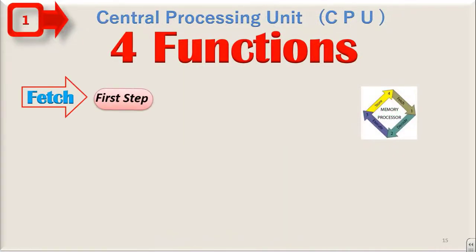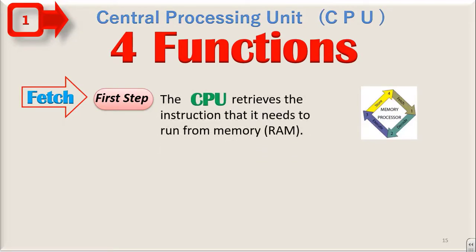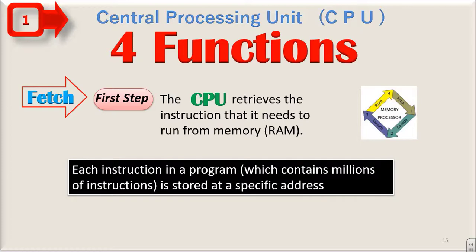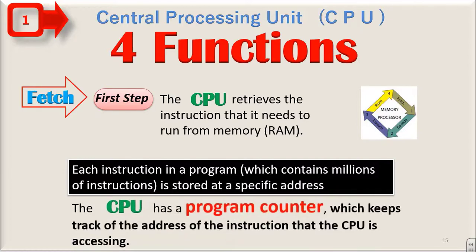Fetch. This is the first step. The CPU retrieves the instruction that it needs to run from memory, that is RAM. It reads the instruction from RAM. That is known as fetching. Each instruction in a program which contains millions of instructions is stored at a specific address. The CPU has a program counter which keeps track of the address of instruction that the CPU is accessing.